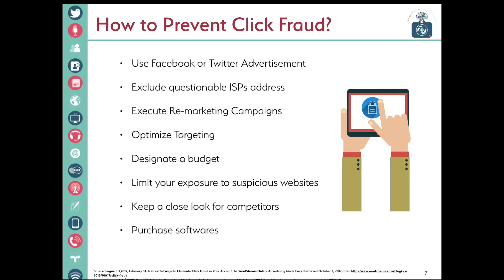Another solution for click fraud by publishers is running remarketing campaigns. The remarketing will run ads to people who have previously visited the publisher's website. Also, it is essential to optimize the targeting areas — for example, exclude geographic regions where there is a suspicious click rate. Set up a daily budget to avoid going over budget, and don't waste ad budget running ads on questionable websites. Be aware of the competition and monitor the keywords. Lastly, there are software tools that help us prevent and reduce click fraud.